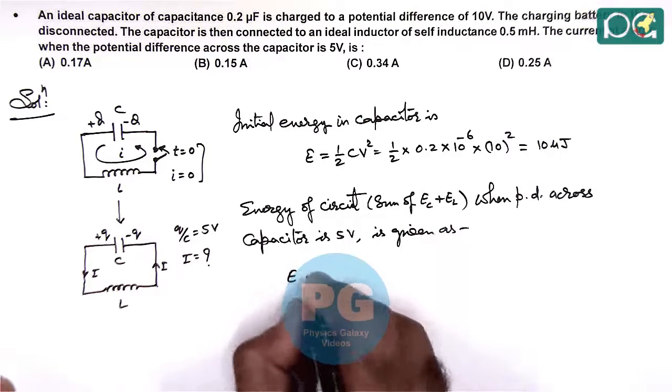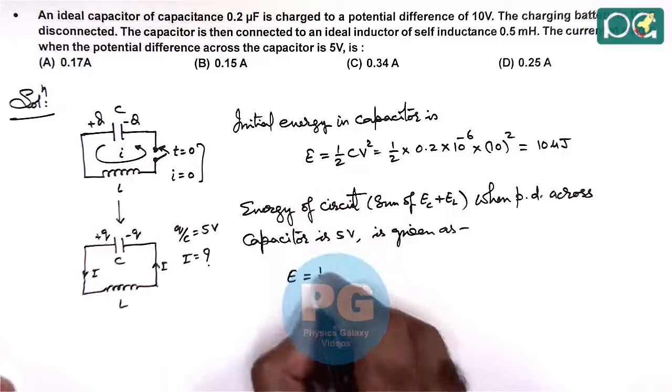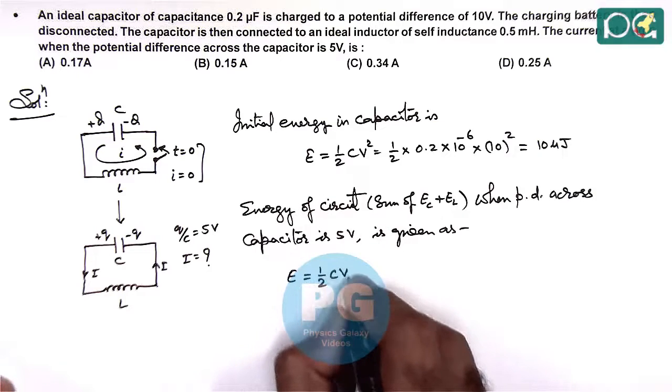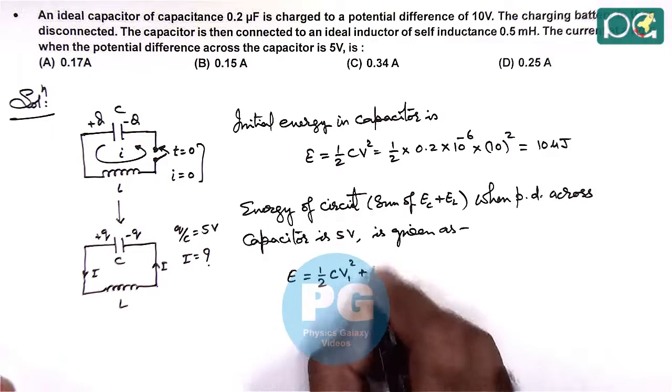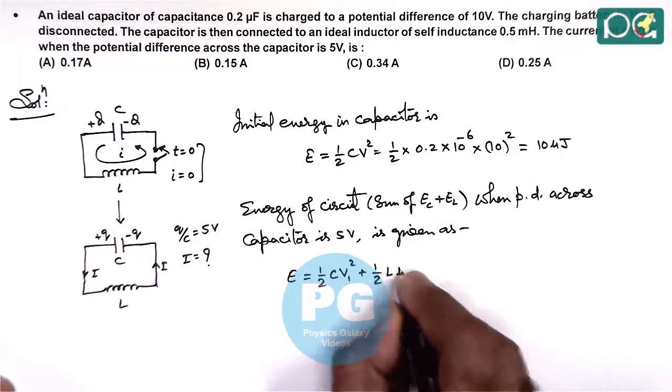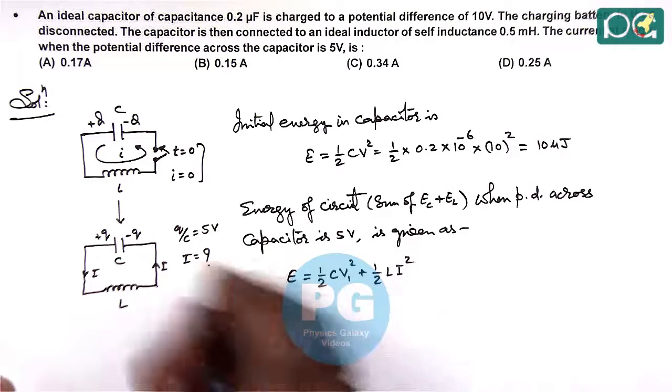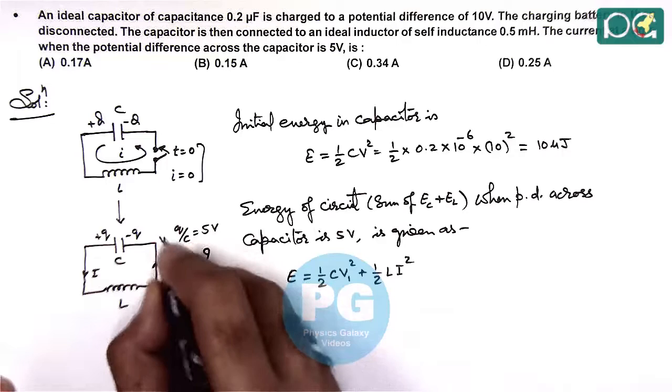The initial energy must be the same, so it should be half CV1 squared plus half LI squared, where V1 is given to us as 5V.